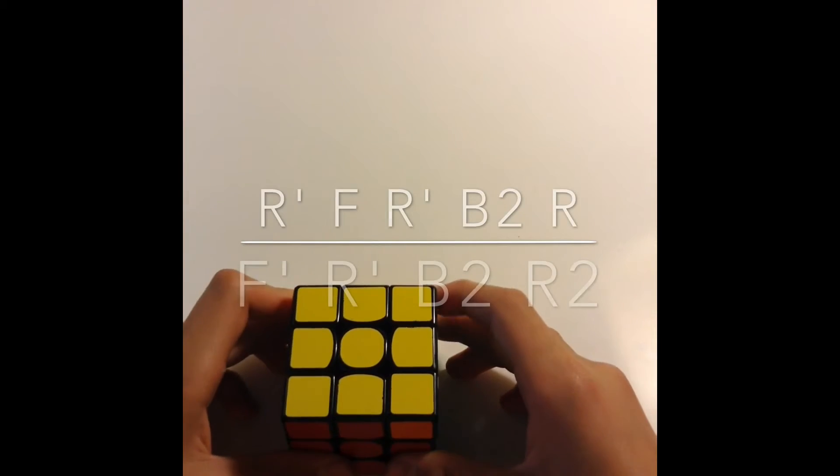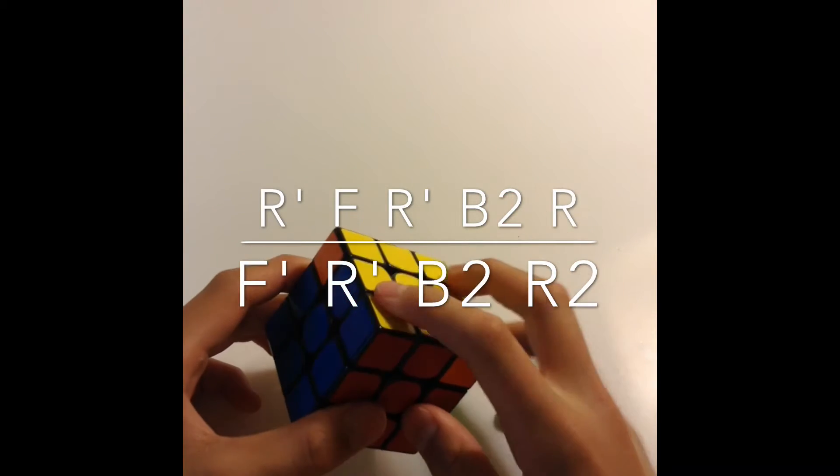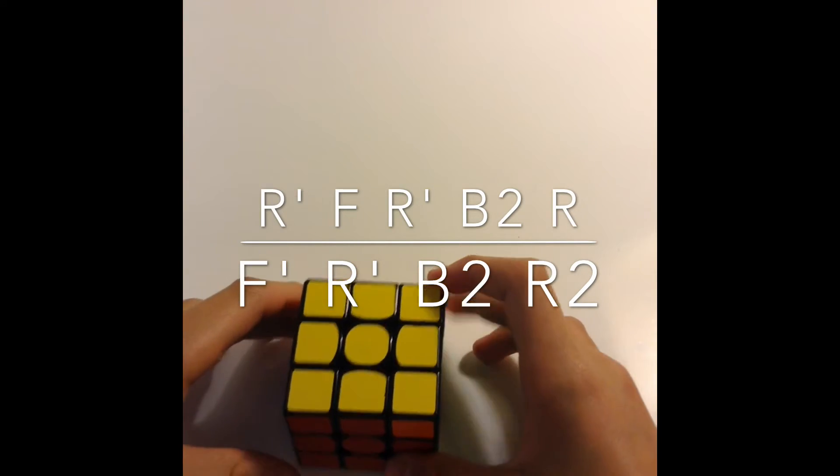Let's get into executing the AA perm. The way you hold it when you execute it is you hold the block at your left and the headlights on your back and do the following algorithm.